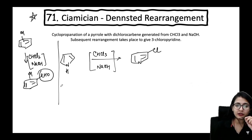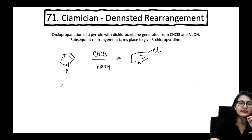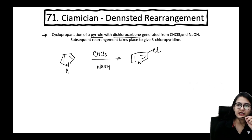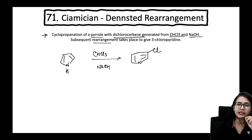Cyclopropanation of pyrrole with dichlorocarbene — generated from CHCl₃ and NaOH — followed by subsequent rearrangement takes place to give 3-chloropyridine. Let's see what happens step by step.